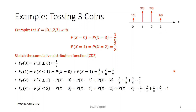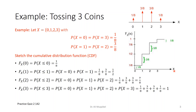If you would like to sketch this, here's how it looks. We start with 0, and at the first possible outcome it goes up like a staircase, finally accumulating to 1.